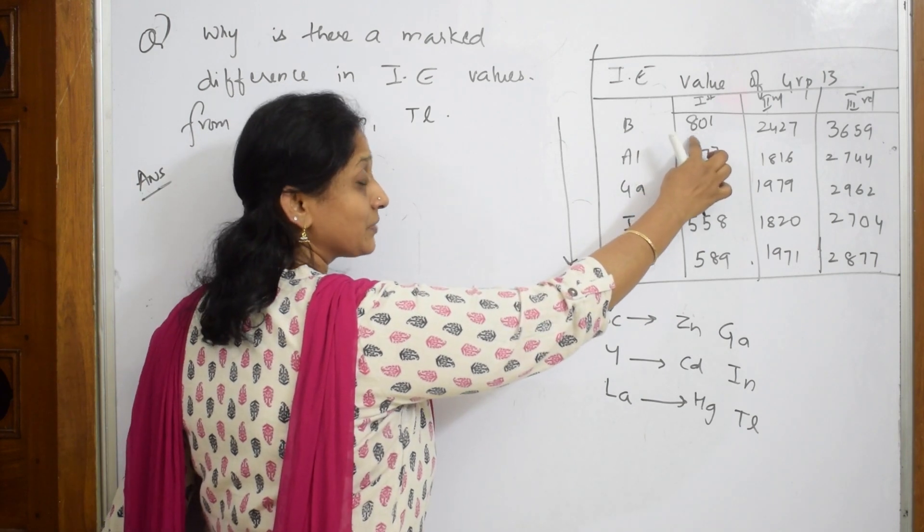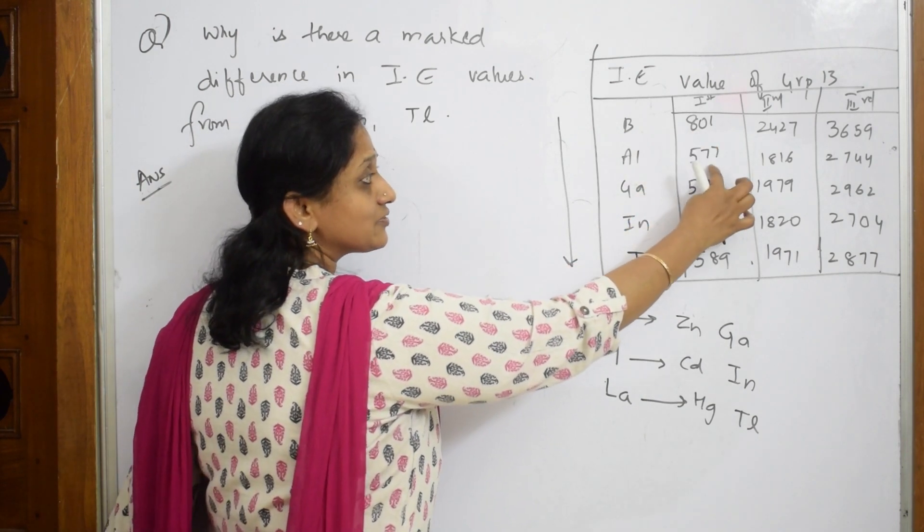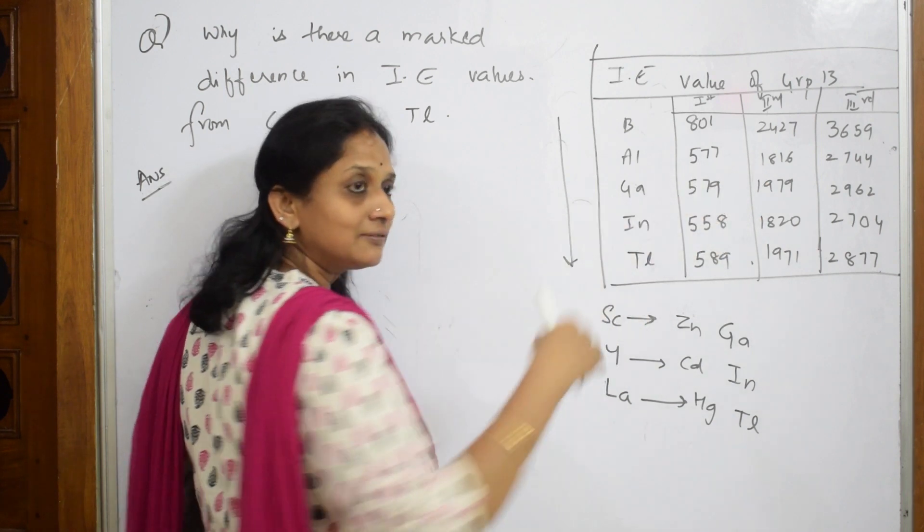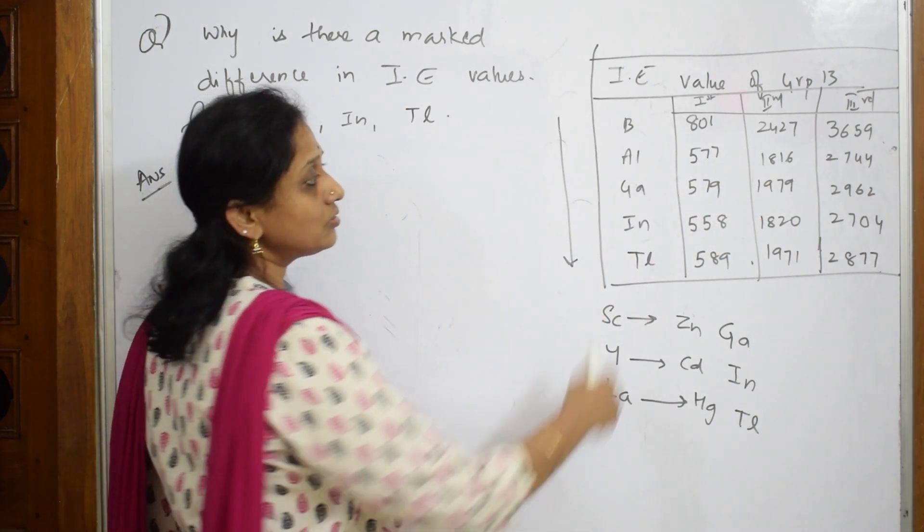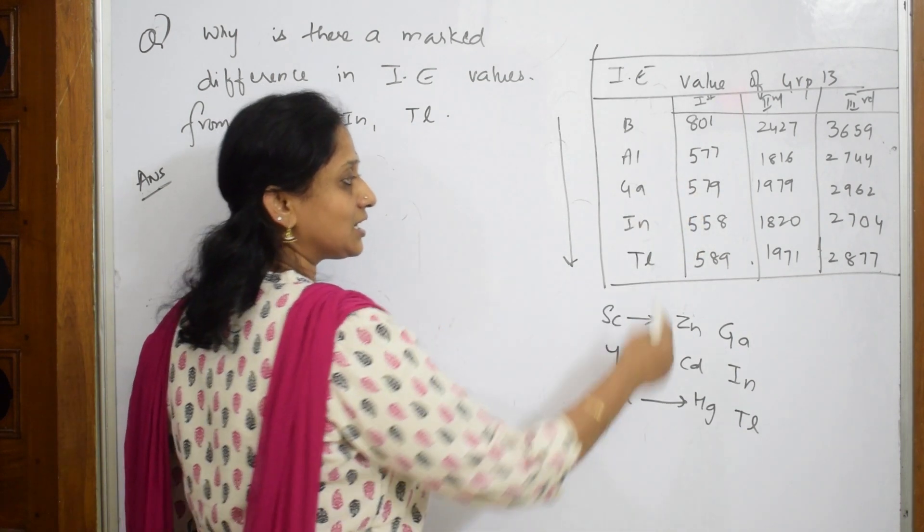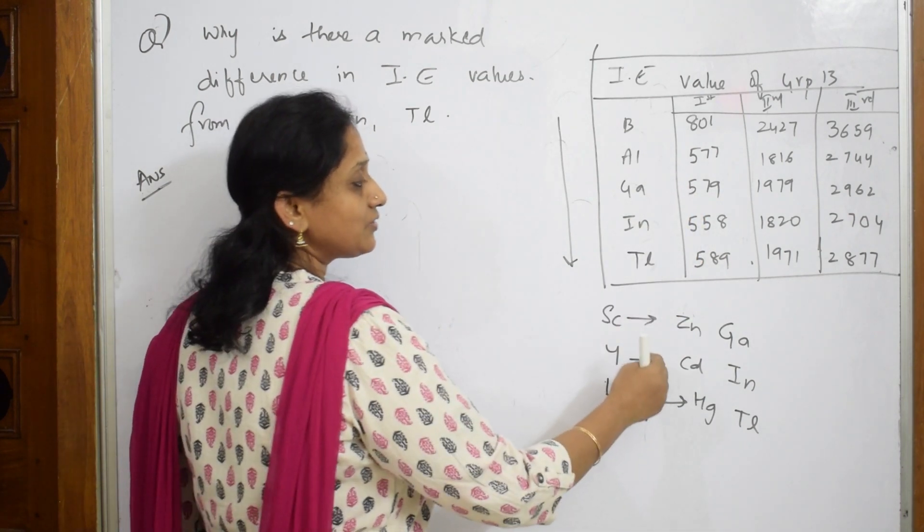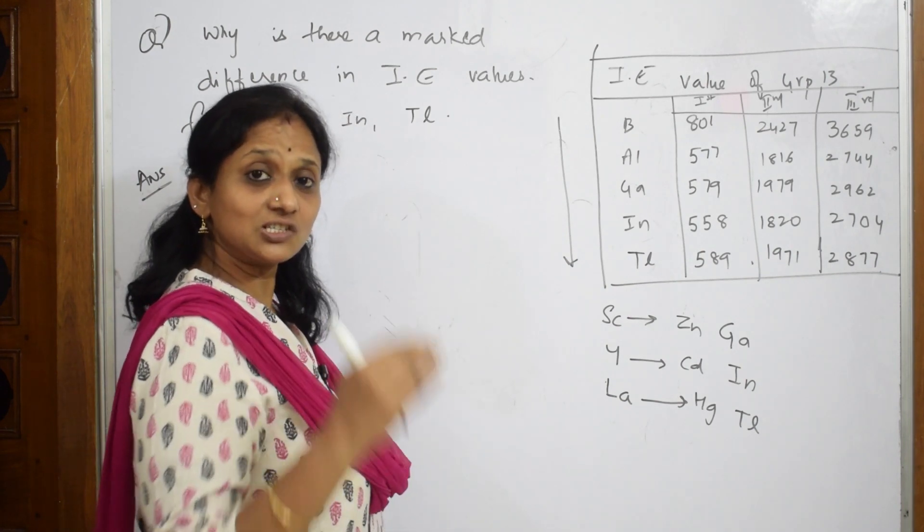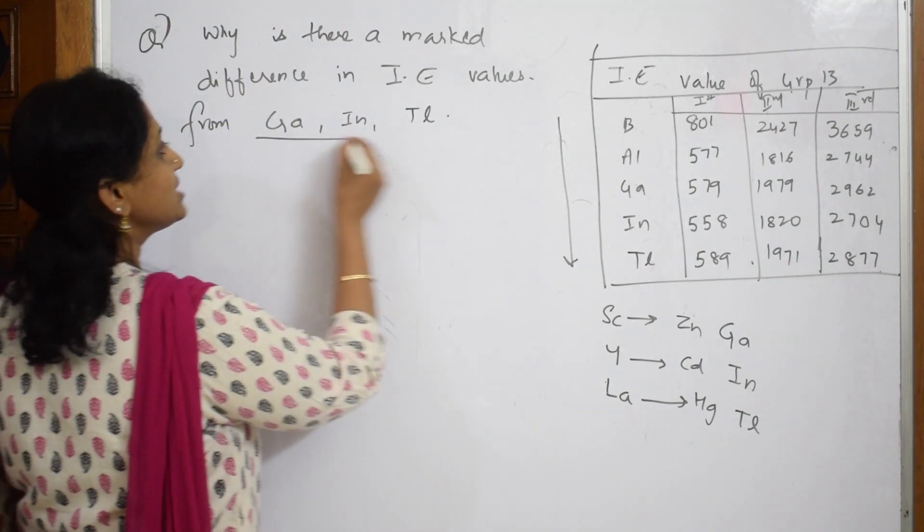It was 801, then it decreased to 577 - good. From 577 it should become 574 or something, but it has gone to 579. Then it decreased again, but after 558 it has gone to 589. It's increasing, decreasing - there's a lot of variation. That is what they asked, why is the difference?